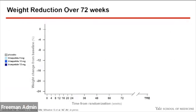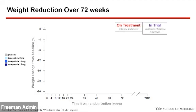In terms of the results, weight change from baseline in percent is on the y-axis, and time from randomization in weeks is on the x-axis. The color coding scheme: gray for placebo, light blue for tirzepatide 5 milligrams, middle blue for 10 milligrams, and navy blue for 15 milligrams. On-treatment or efficacy estimate is in red, and in-trial or treatment regimen estimate is in purple.